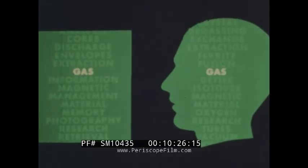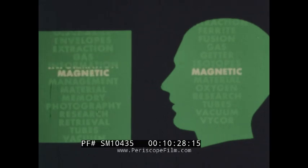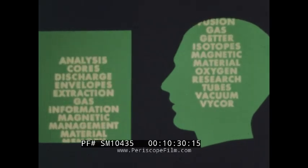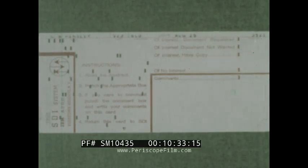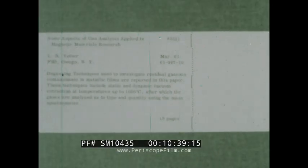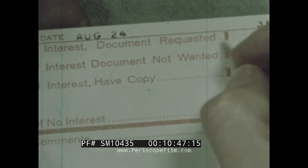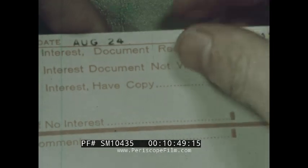When the number of matches between the document's keywords and the person's key interests met a predetermined percentage, the computer produced a notification card which brings a new item of information to the user in the form of an abstract. Selective dissemination of information. Feeding back a reply card to the selective system helped keep it responsive to the user's changing interests.